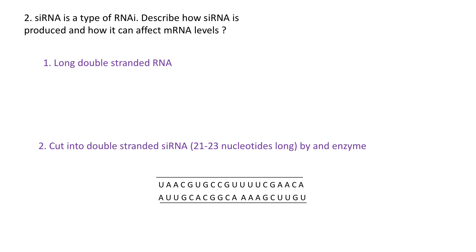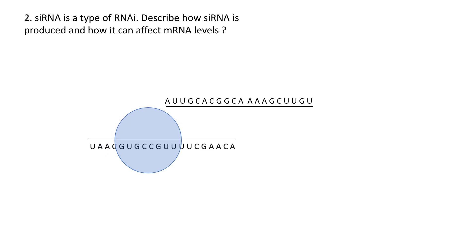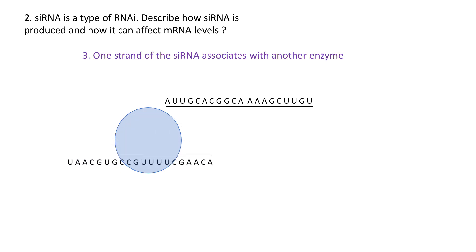...this is cut into double-stranded siRNA — small interfering RNA — and that's normally around 21 to 23 nucleotides long. That's done by an enzyme. Then this double-stranded siRNA becomes single-stranded and associates with a different enzyme — different to the enzyme that cut up the long double-stranded siRNA.